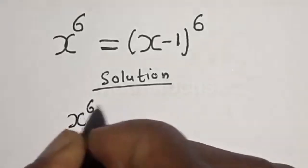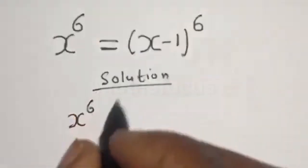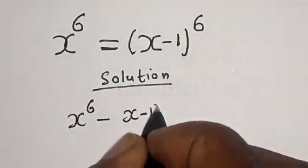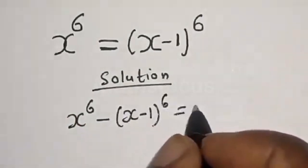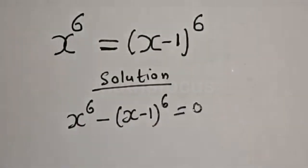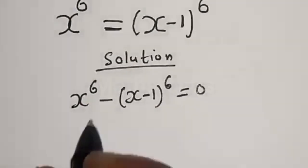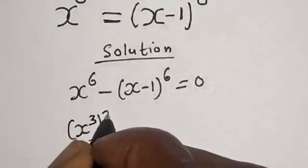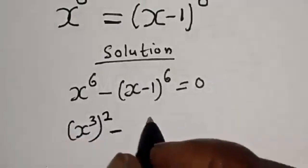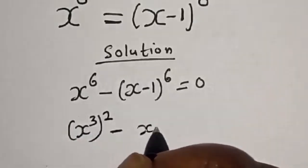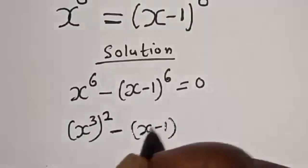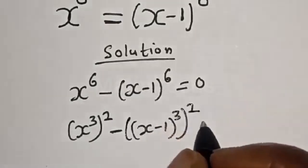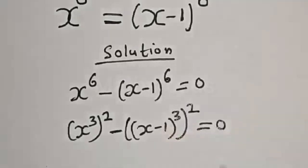x raised to power 6, if this one comes to this side, becomes minus x minus 1 raised to power of 6, equal to 0. Then x raised to power 6 can be written as x raised to power 3 squared, minus x minus 1 raised to power 3 squared, equal to 0.